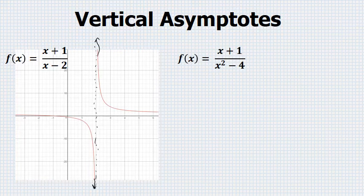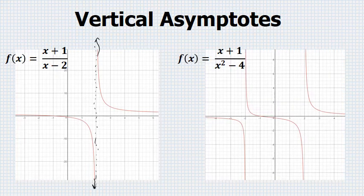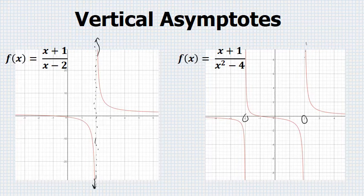Here's another function that has vertical asymptotes — it actually has two. There's a vertical asymptote at x = 2 and x = -2, and these are imaginary lines on the graph that the graph will again get closer and closer to, yet never actually touch.